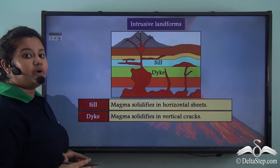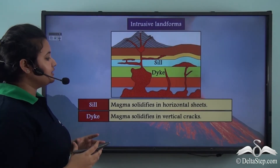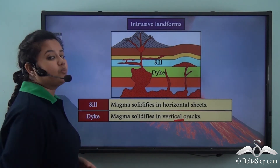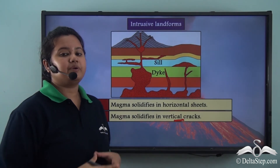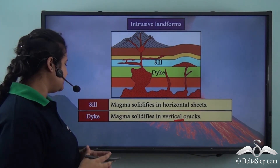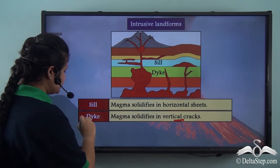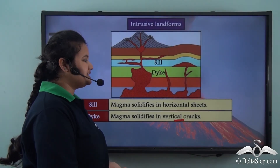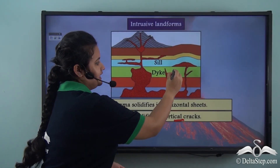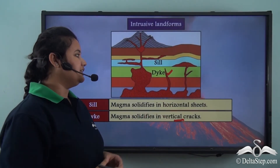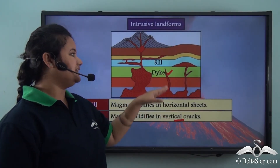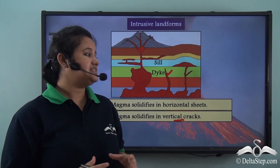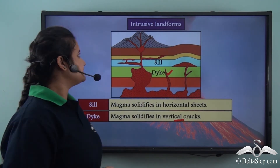If magma solidifies in vertical cracks while escaping through them, then dikes are formed. In this picture this is a dike — we can see that magma solidifies in vertical cracks.